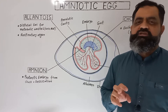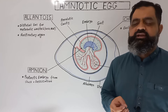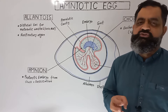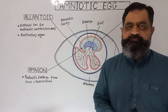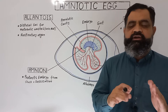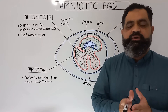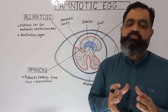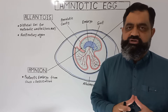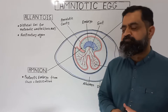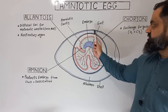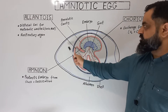A leathery shell is usually found in reptiles like tortoises and turtles, while a hard shell is usually associated with birds. The shell is made up of calcium carbonate. It is semi-permeable and provides protection from desiccation, light, and the harsh conditions of the terrestrial environment.